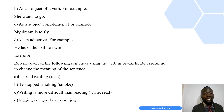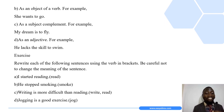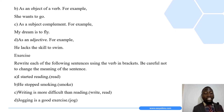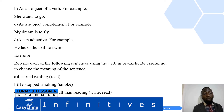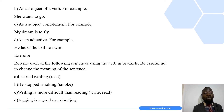Now here are some practice exercises in question form. Rewrite each sentence using the verb in brackets, being careful not to change the meaning. First: 'I started reading' — verb given: read — becomes 'I started to read.' Second: 'He stopped smoking' — verb given: smoke — becomes 'He stopped to smoke.'